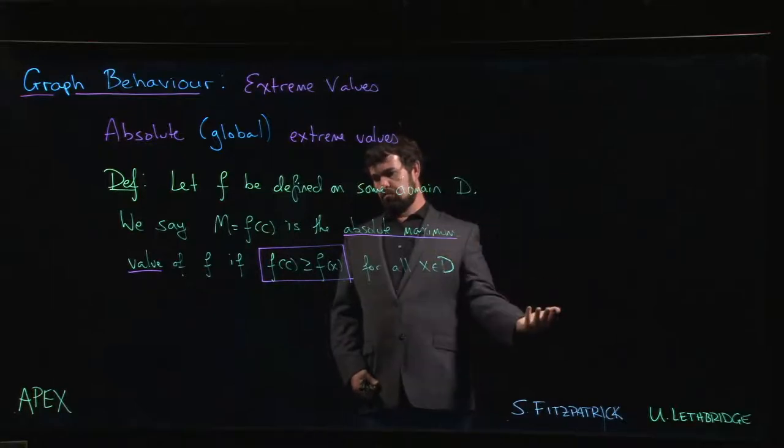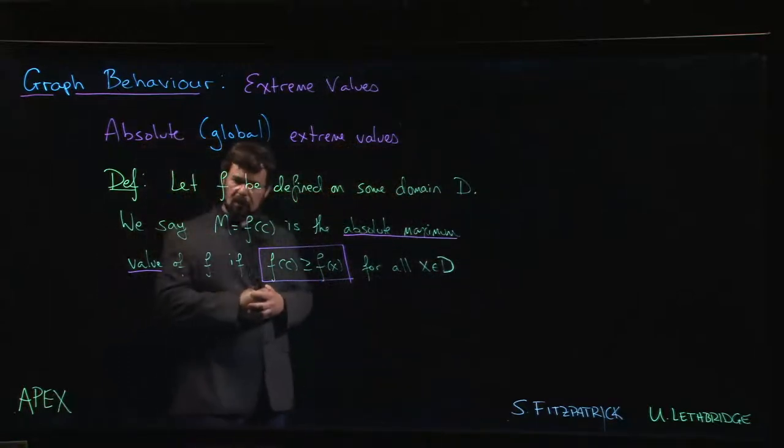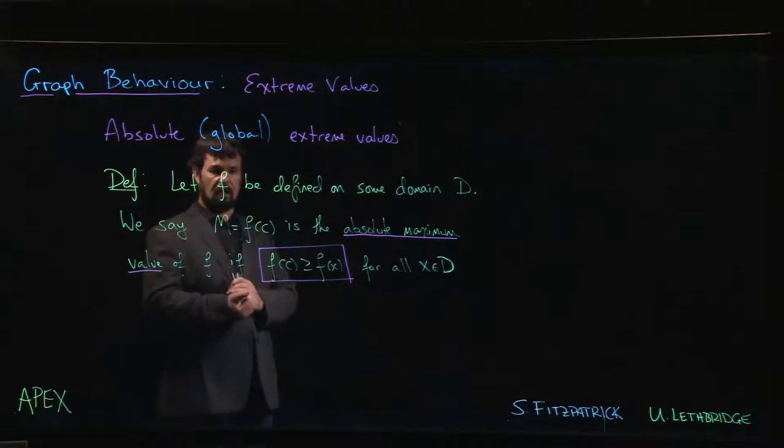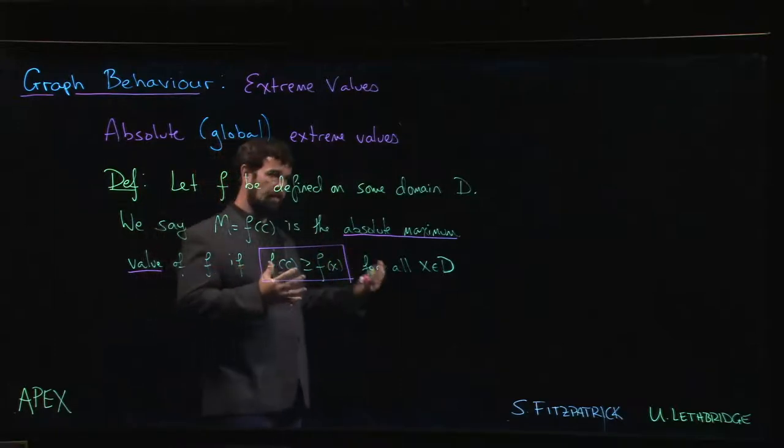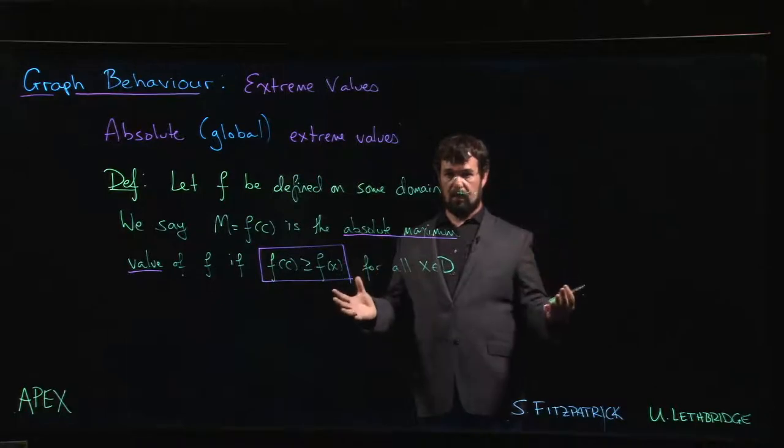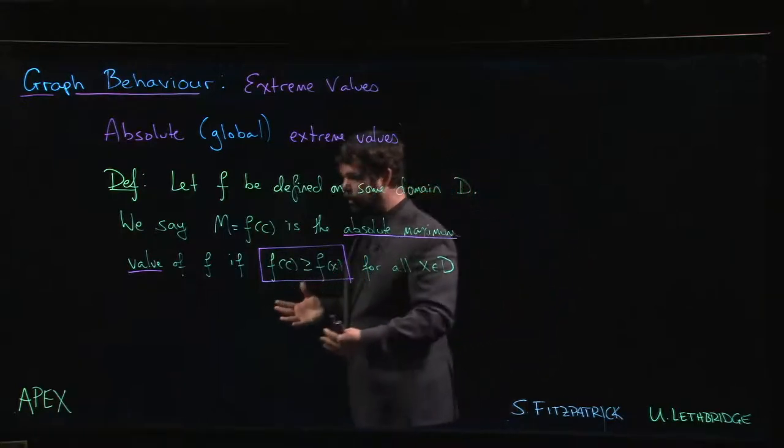But we also want to know something about what you can do with derivatives. We have some vague notion the derivative has something to do with tangent lines, with velocity, but we need to explore this a little bit further. What we're gonna do is we're gonna look at derivatives in this context of graphs of functions, the graphical behavior of functions. What does the derivative tell us about how a function behaves, what its graph looks like? Turns out derivatives have a lot to say about this.